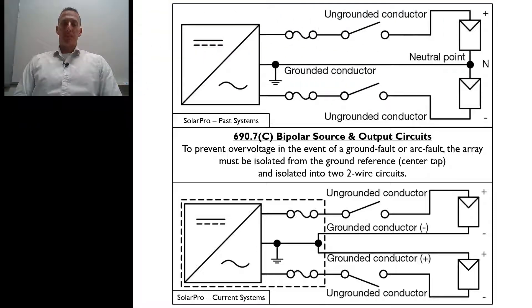In 690.7C of the 2017 National Electrical Code, it talks about bipolar source and output circuits. And so what it states, it says to prevent overvoltage in the event of a ground fault or arc fault, the array must be isolated from the ground reference or that center tap and isolated into two two-wire circuits.